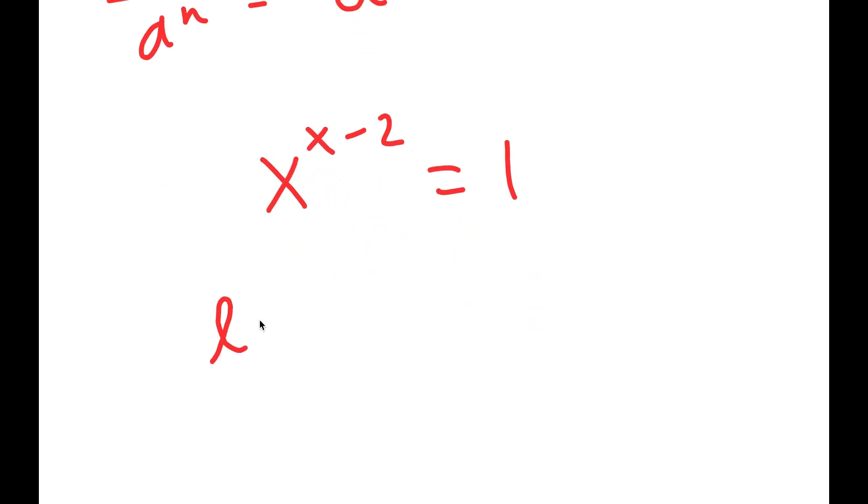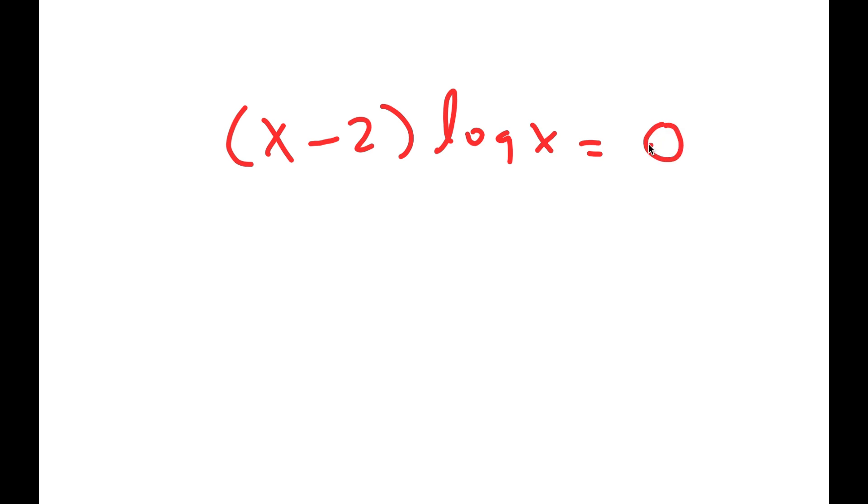Now I'm going to take the log on both sides. So I get log x to the power of x minus 2 is equal to log of 1. So this means that x minus 2 times log x is equal to 0.